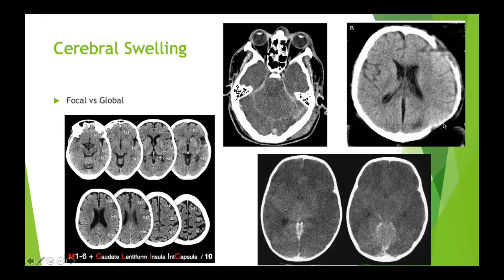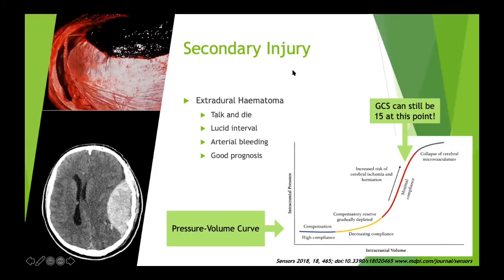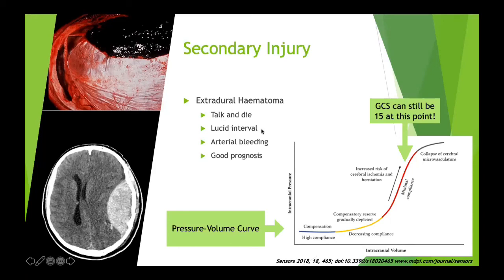Secondary injury - we try our very best to prevent it. The extradural patients we really do rush to theater - they are red cases. These patients can be GCS 15/15 and dead five minutes later. They typically sustain a head injury, have a very short period of loss of consciousness, wake up and have a normal conversation - the classic lucid interval - and then a few minutes later deteriorate rapidly due to arterial bleeding. We are very aggressive with management because if we get to them in time, they have very good prognosis and can often be discharged home the next day with no neurological deficit.